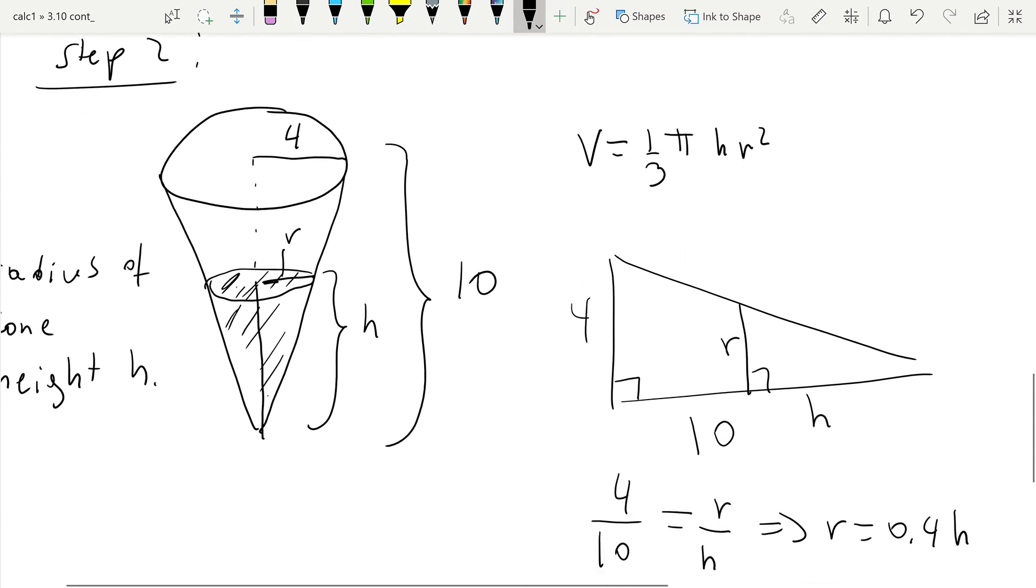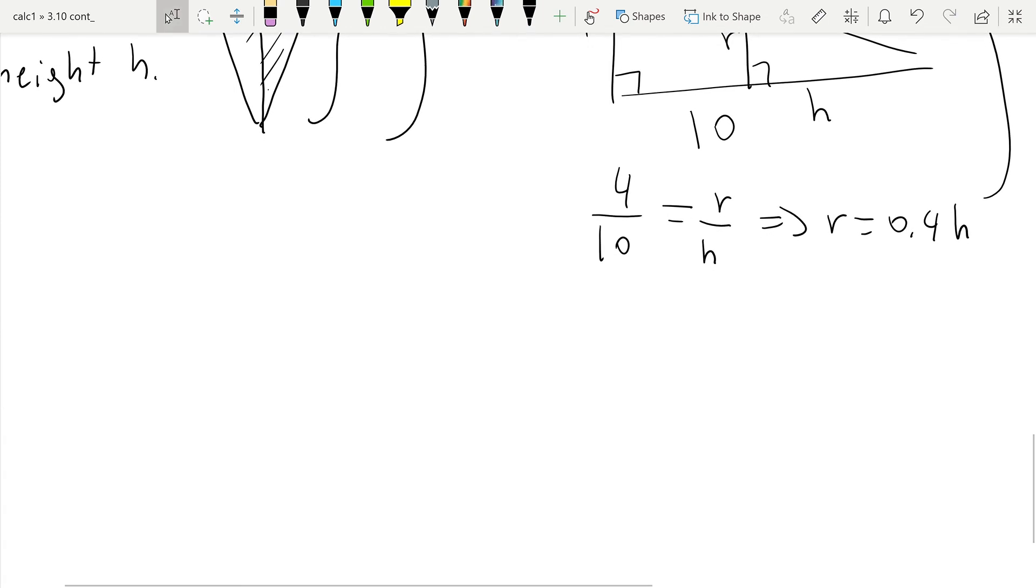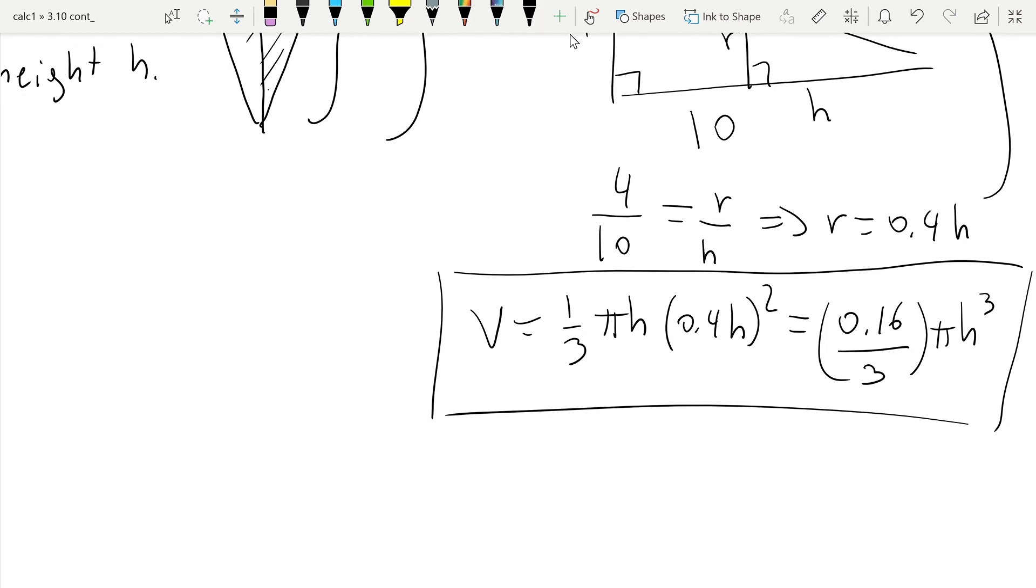Plugging this back into the formula for the volume, we get that the volume is then one-third π H times (0.4H) squared, or 0.16 over 3 times π H cubed. Now we have a relation, a geometric relation between our two variables - the variables that we chose at the beginning: V and H.